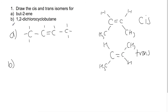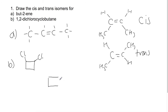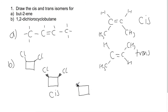For part B, we're looking at drawing 1,2-dichlorocyclobutane. Cyclobutane would be a square, and we're looking at having two chlorines on it in the one and two positions. We need to show the chlorines either coming towards us or going away to show which side of the ring they're on. For the cis isomer, both chlorines are on the same side of the ring, drawn as coming out of the page. For the trans isomer they're on opposite sides, so one will be coming towards you and one will be going backwards.